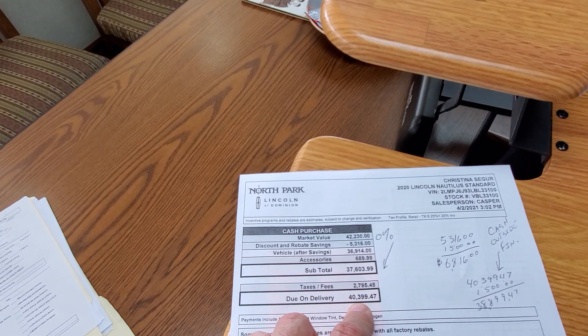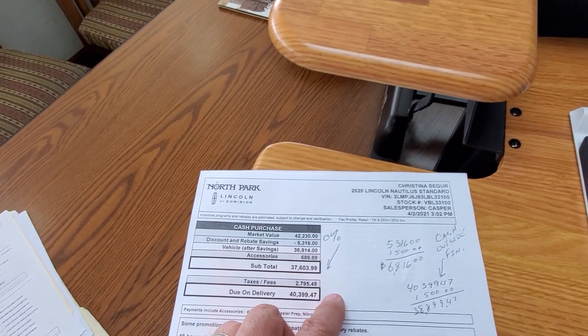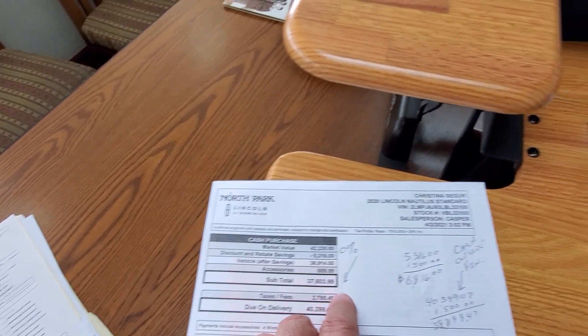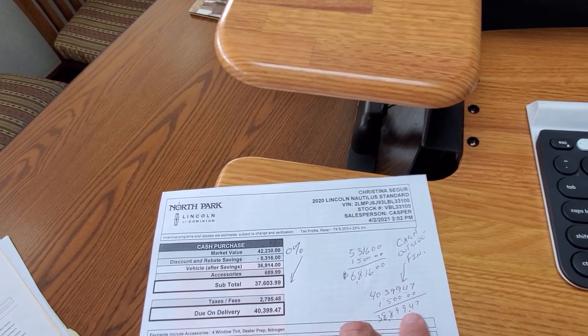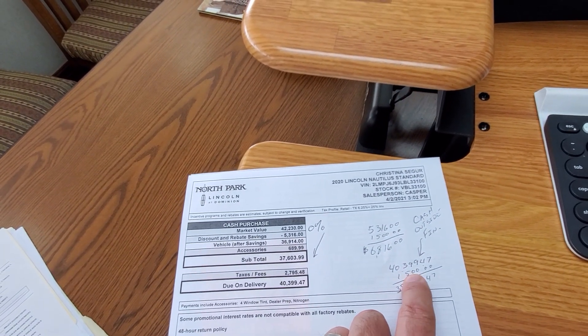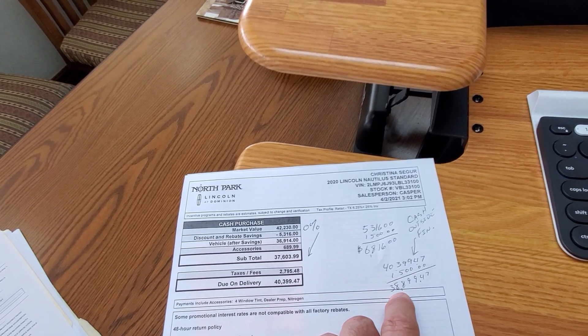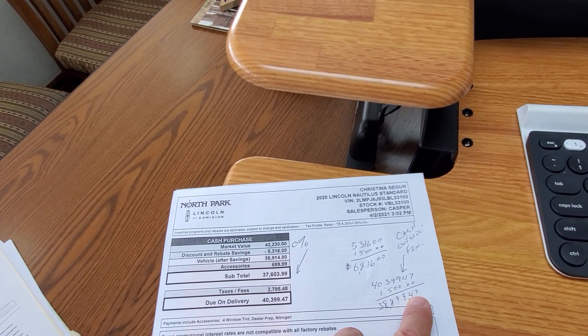Total out the door, $44,399.47. And then if you don't take advantage of the 0% and you do outside financing or cash, the total is an extra $1,500 in discounts. Puts us at $38,899.47.